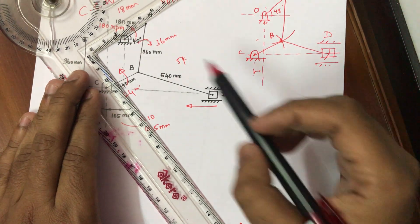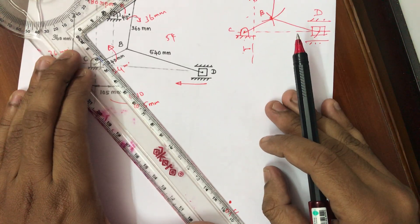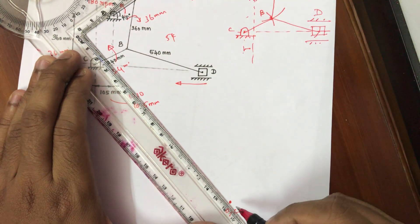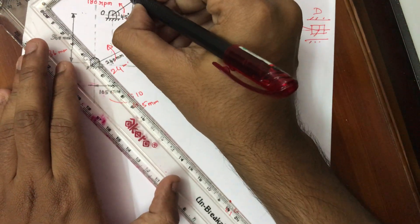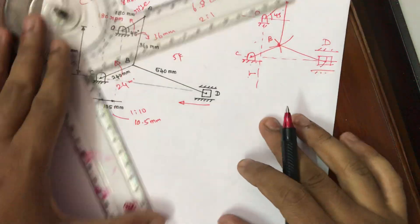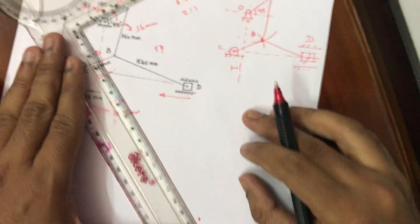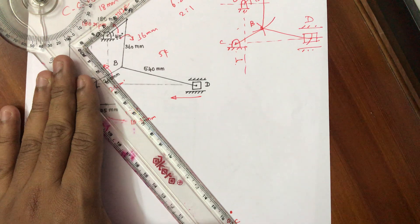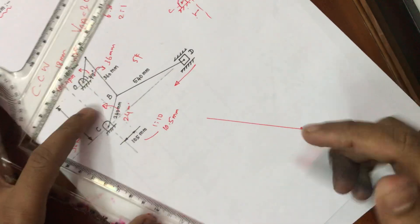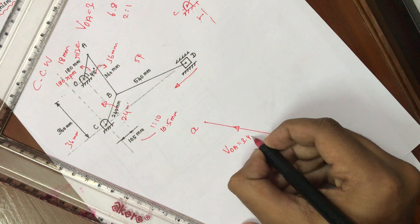If we drop the velocity vector to scale, using a scale of 2:1, the actual dimension is 6.8 cm. That represents VOA of 3.4 m/s. The direction is rising upward towards the left side.